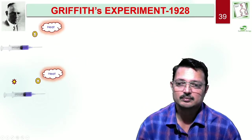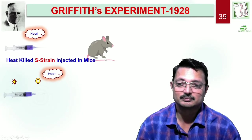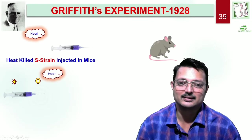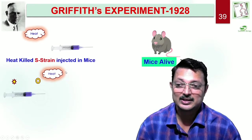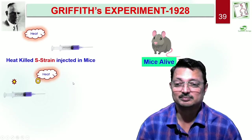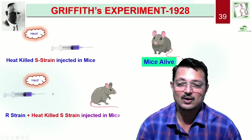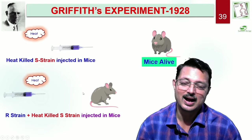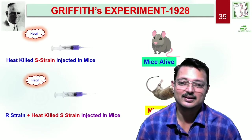Next, the virulent S strain was heat-killed — meaning the bacteria were killed. When heat-killed S strain was injected into mice, the mice survived. Then, heat-killed S strain and live R strain were mixed and injected together. To the wonder of Griffith, the mice died.